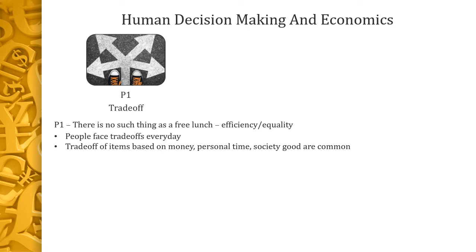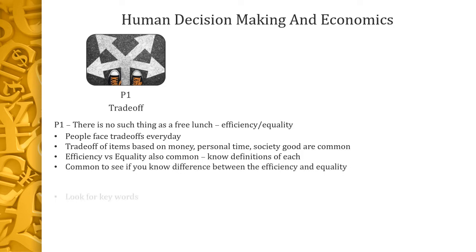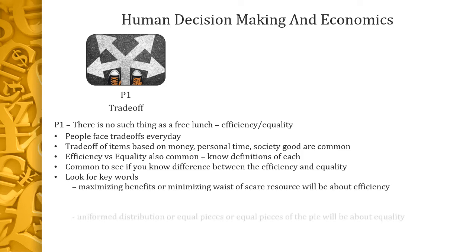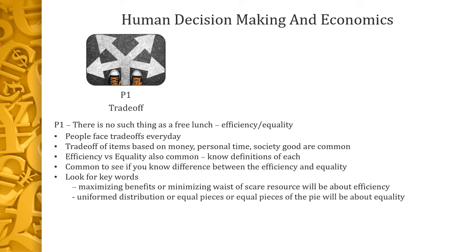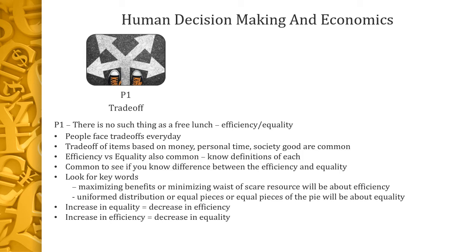The other item you could see is efficiency versus equality. Quite often instructors make this an easy question about how you define these, so just have those definitions. When looking for anything to do with efficiency, look for words like maximizing benefits or minimizing waste for a scarce resource. With equality, you're looking for words like uniform distribution or equal pieces of a scarce resource. Also remember which direction they go: an increase in equality generally means a decrease in efficiency, and vice versa.